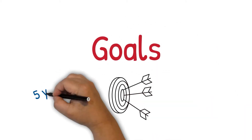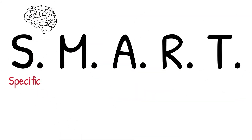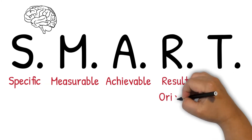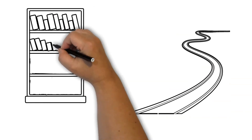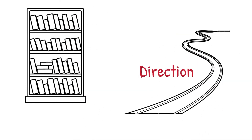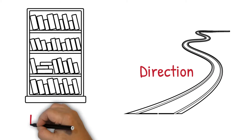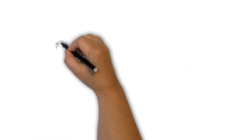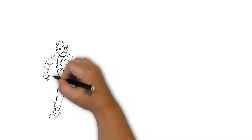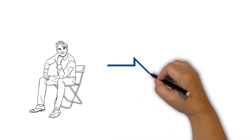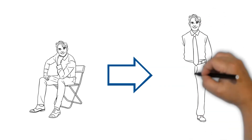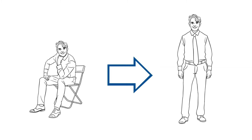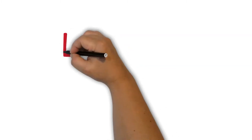Then we turn our dreams into Goals. Goals are anything inside five years, and we want to put them to the SMART test: Specific, Measurable, Achievable, Results-oriented, with a Time frame. Goals give you direction and show you what you need to learn. People may say you can't achieve those goals — and the person you are today might not — but the person you're going to become definitely will.